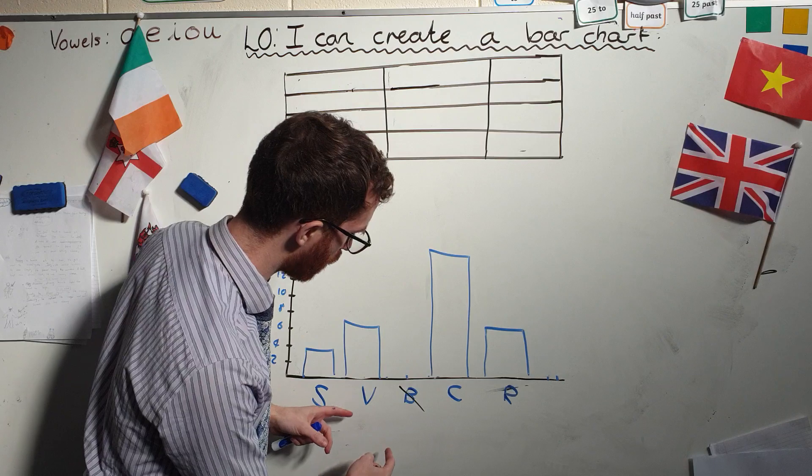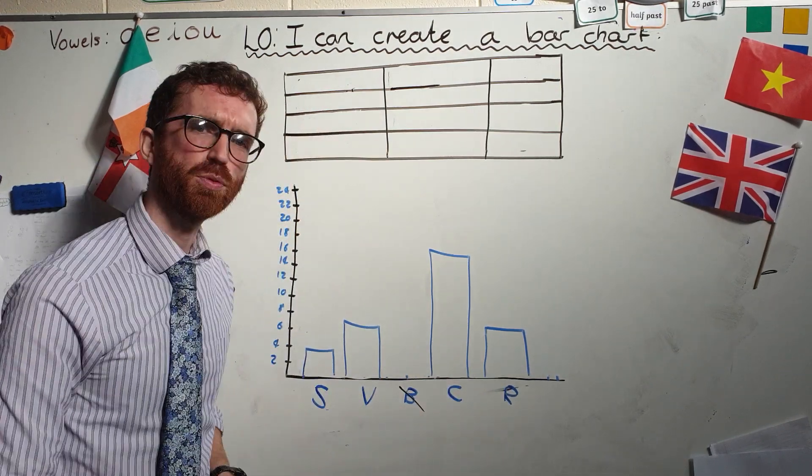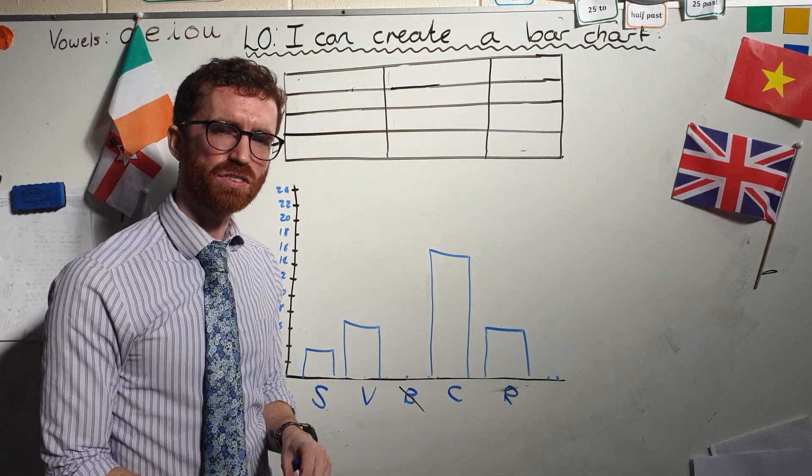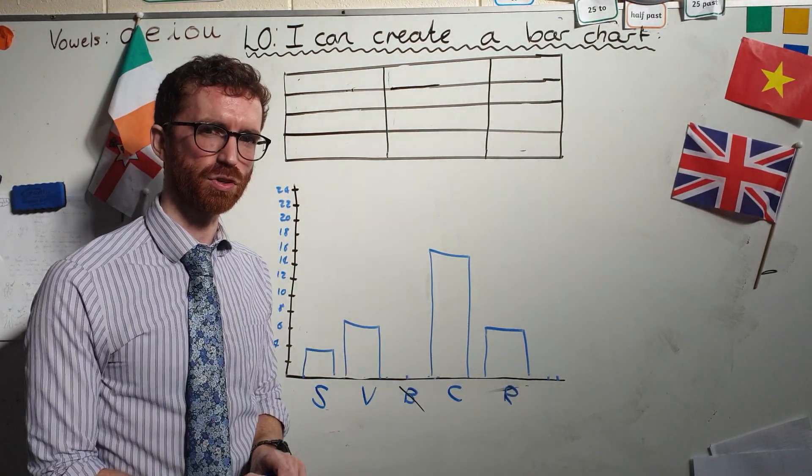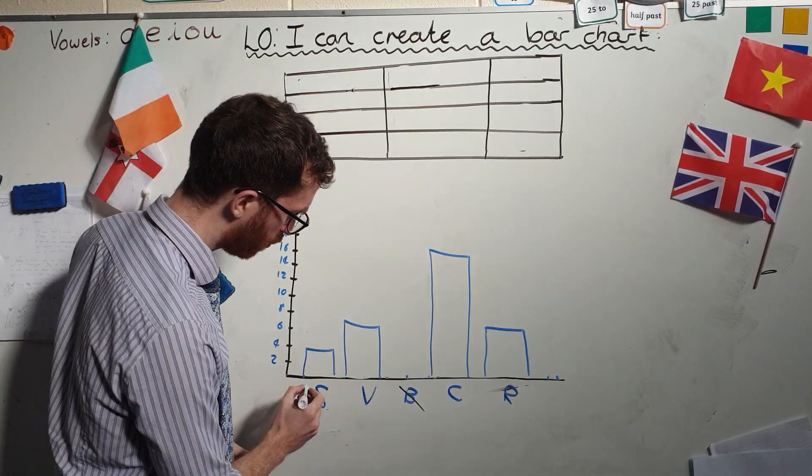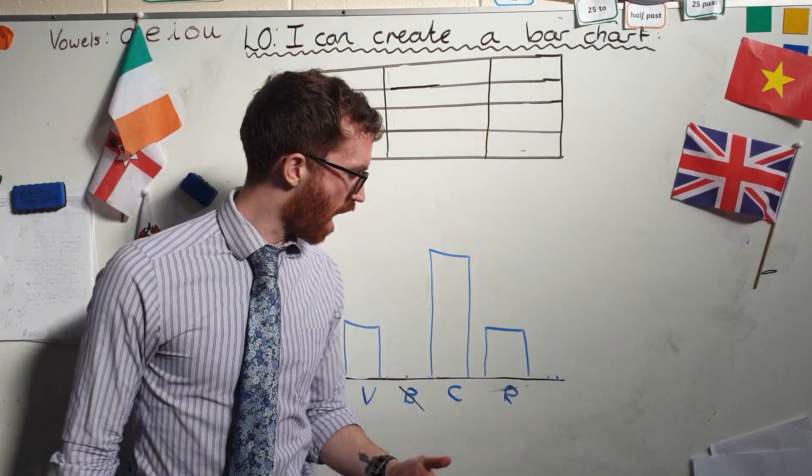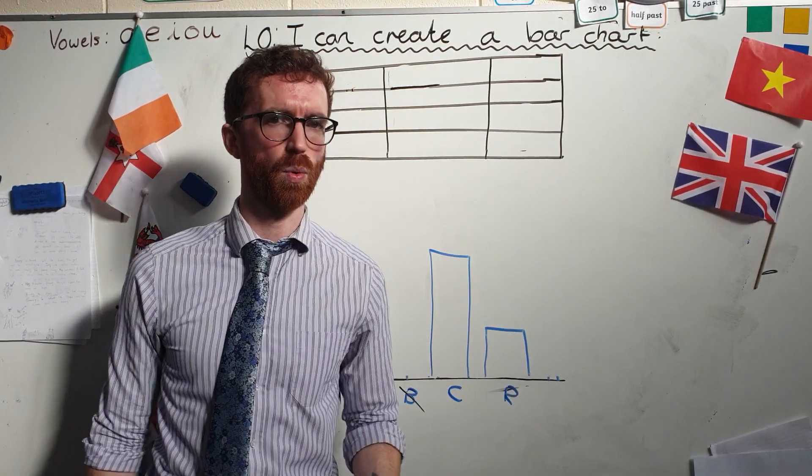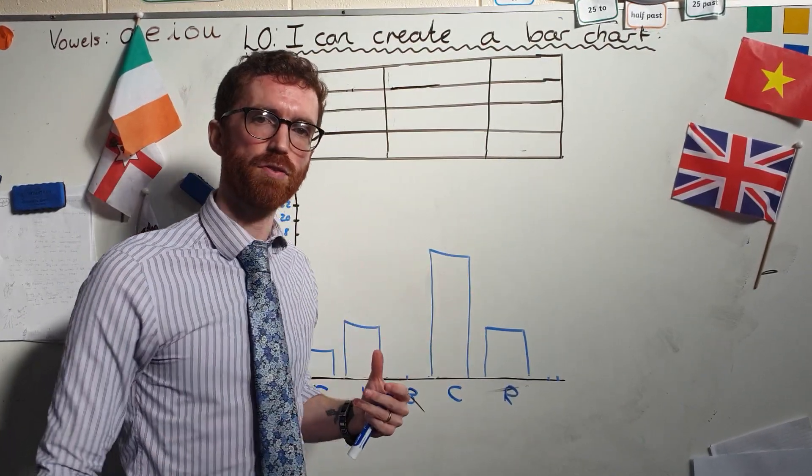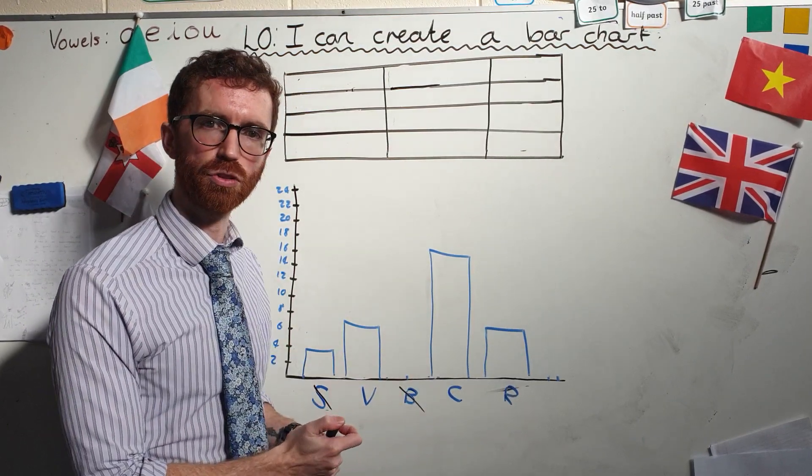So I look at the other bits of information. Vanilla and raspberry are both kind of selling the same. Strawberry is selling a little bit worse, and actually for me as a business, it's not worth me buying all this strawberry ice cream if not enough people are gonna buy it because the ice cream is gonna go off after a while. So I stopped buying the strawberry. Now my business becomes streamlined. I've only got the products that are selling well. I make more money. The bar chart allowed me to see that information more clearly. So it was a really good way for me to run my business.